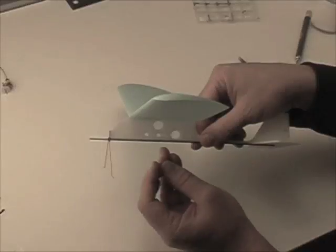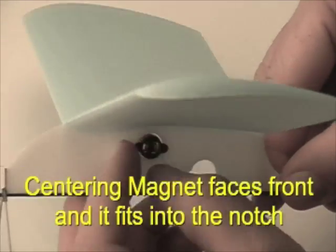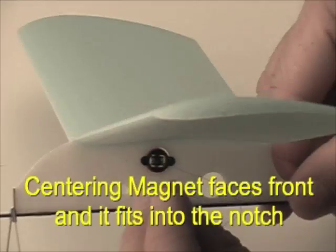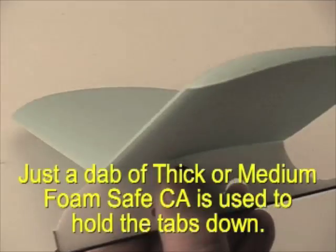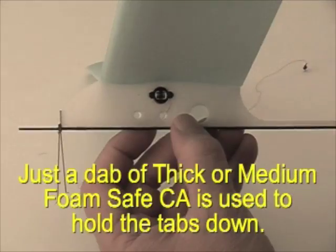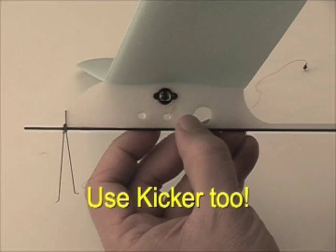Now we're ready to install the MiniAct actuators. There are notches cut for the centering magnets, and you can use that as an alignment guide when you install the actuators.